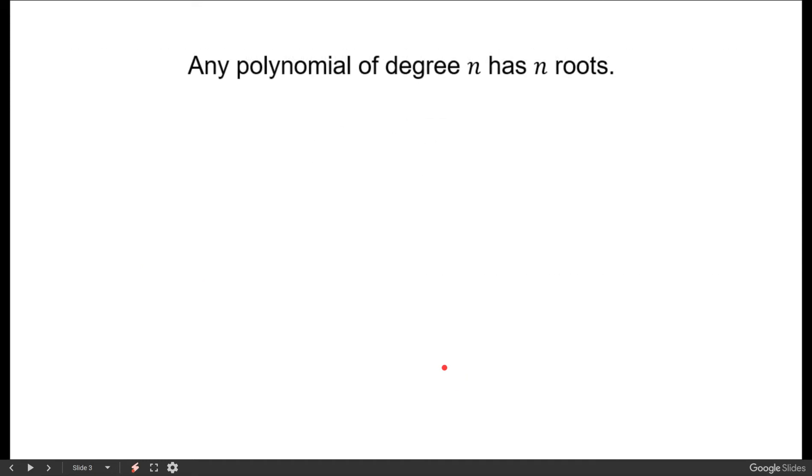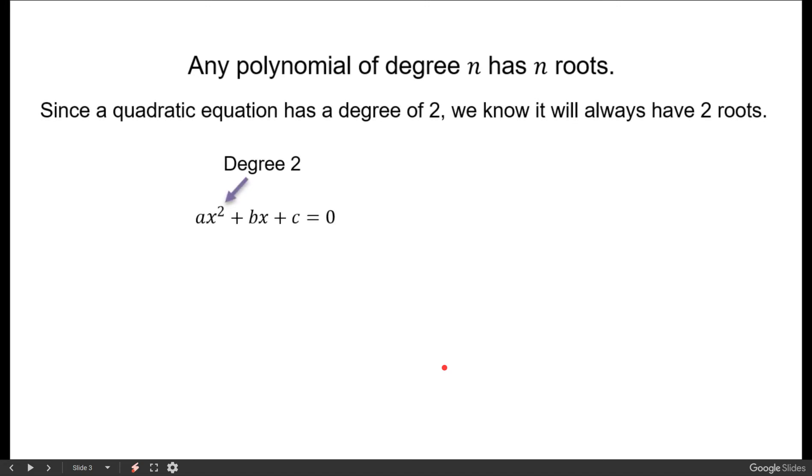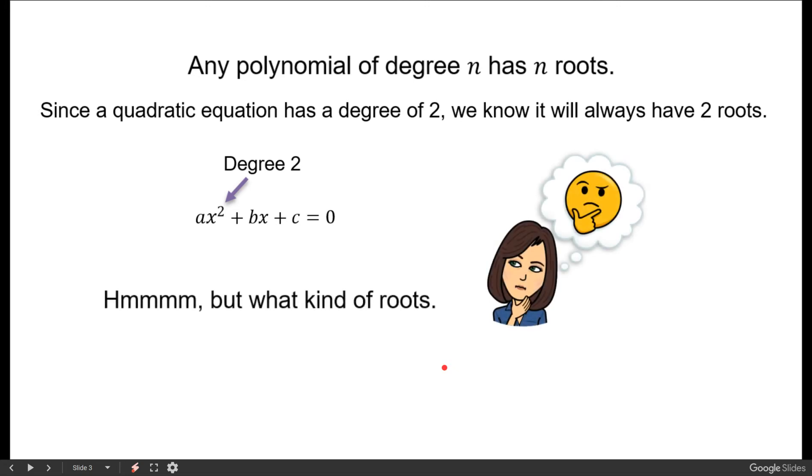You may already know that a polynomial of n degree has n roots, so when we're talking about a quadratic equation since it has a degree of 2 we know that it's always going to have two roots or two solutions. But what kind of roots?